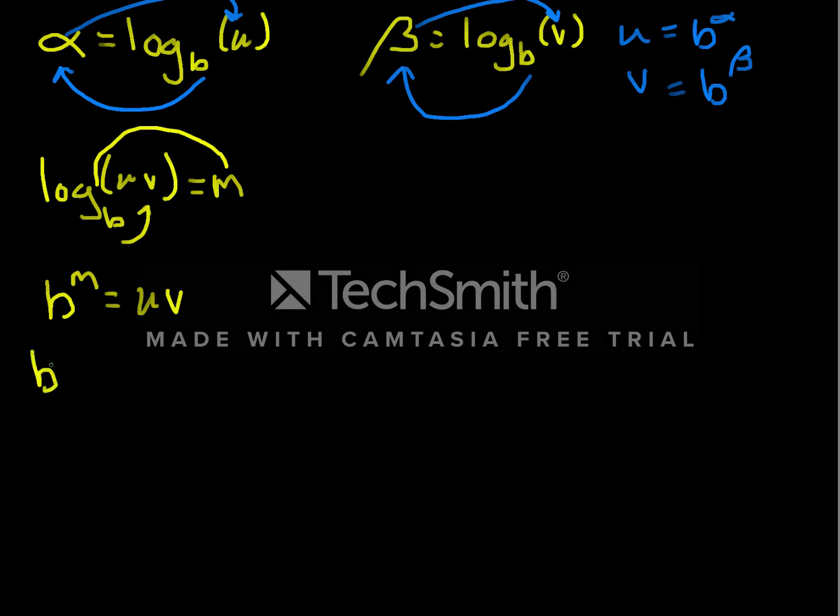So that's what u and v are. So that means b to the m equals uv. So b to the m is equal to b to the alpha times b to the beta. But when I multiply the same base, that's the same as adding exponents. So I get that b to the m is equal to b to the alpha plus beta.